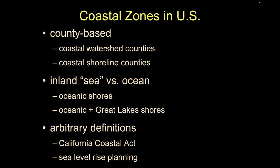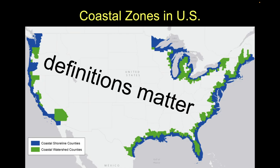Then we have arbitrary definitions, which vary by place and time. The classic would be our own California Coastal Act, which has a very arbitrary definition of what is the coastal zone and what is not. We've also seen a lot of this bubble up in the context of sea level rise planning — when groups start making maps and ask, well, where are we going to draw the line? They just sort of make an arbitrary line. So there are a fair number of arbitrary definitions that vary based on where we are in the U.S. The definition we pick is going to change our output and our outcome — here are some coastal shoreline counties in blue, and if we add coastal watershed counties, it's potentially a lot more land.